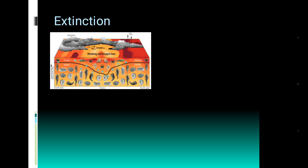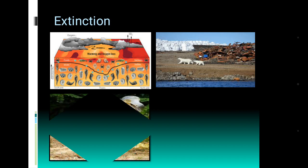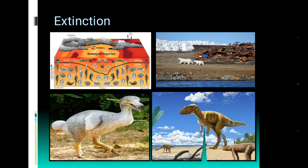What will happen if any component of an ecosystem is absent? The result will be the extinction of organisms. If any sudden change or pollution occurs in the ecosystem, it will affect the next trophic level of the ecosystem. Finally the result will be extinction, like what occurred in the case of the dinosaurs.